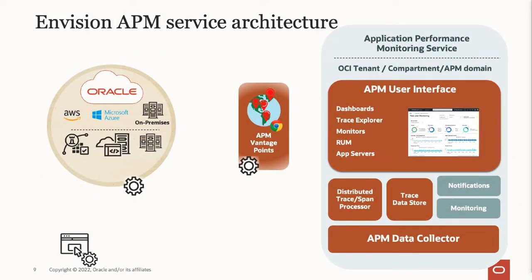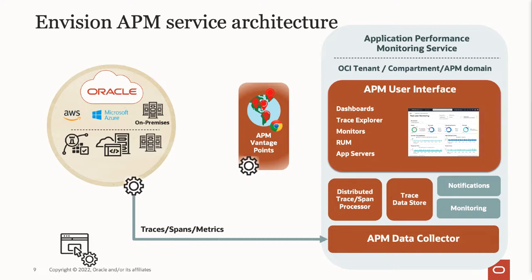Looking at the architecture of the APM service, at the left side of the screen you see the logos of cloud vendors where your application resides. Your application may be running in Oracle Cloud, traditional on-premise data centers, or other cloud platforms such as AWS or Microsoft Azure. To capture application data you need to instrument a tracer or data source. APM supports OpenTracing and OpenTelemetry standards, so you can use APM-provided data sources or other tracers such as Jaeger or Zipkin. Every event in your application becomes a span, and a group of spans is called a trace, representing a transaction.